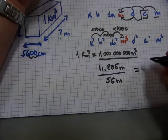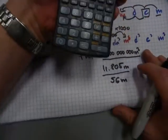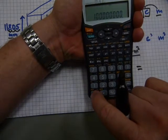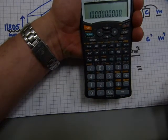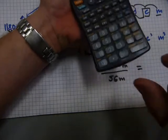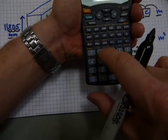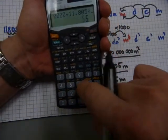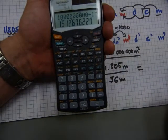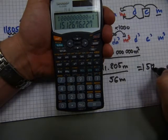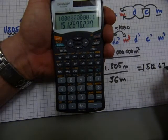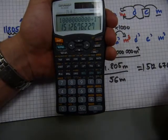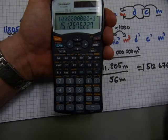So we have 1 billion divided by 11.805 divided by 56, and that's going to give us the length of this swimming pool. Let's see this calculation here. One billion divided by 11.805, and divide it again by 56. What's the answer? The answer is 1,512,676. I'm just going to leave out the point two. And this answer is in meters, because cubic meters divided by meters divided by meters will equal meters.